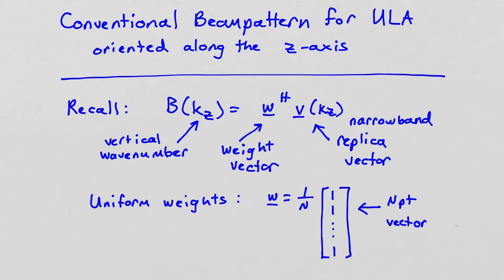If we assume uniform weights, then we're assuming that the w vector is simply an n-point vector of all ones, assuming we have n sensors in our array. And then we have a normalization factor of 1 over n out front, and that's simply going to guarantee us unity gain in our desired look direction.